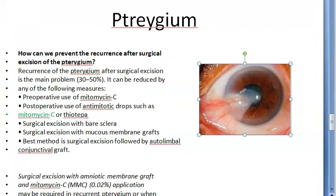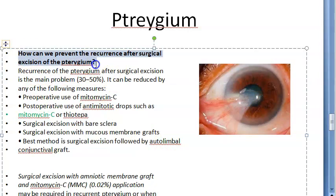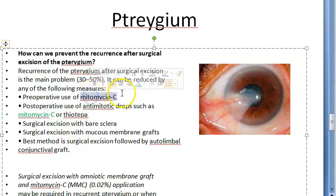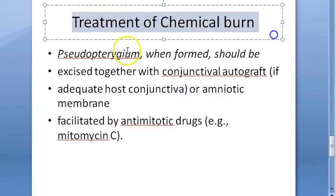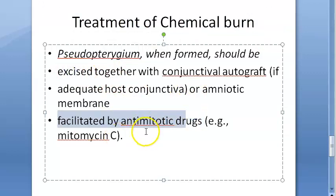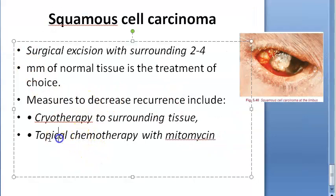For pterygium surgery, Mitomycin C is used to prevent scarring and recurrence. It is applied both pre-operatively and post-operatively. The surgical approach involves excision of the pterygium followed by an amniotic membrane graft with Mitomycin C to prevent recurrence. Chemical burns can lead to pseudo-pterygium, which is excised, and anti-mitotic drugs such as Mitomycin C are again used.